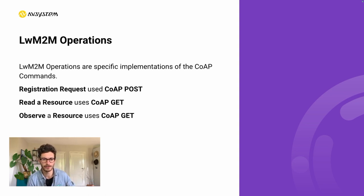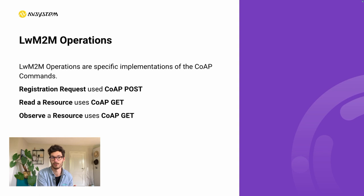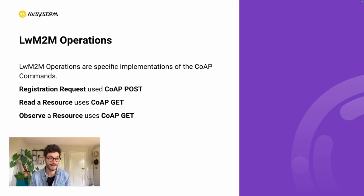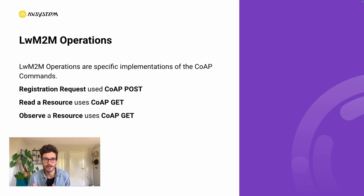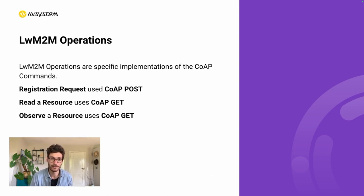As we've seen in previous modules, Lightweight M2M uses specific implementations of CoAP commands. For example, there's the registration process, where the end device requests to register to a specific network — if we deconstruct this request, the device simply sends a CoAP POST message. If the server wants to read a specific resource on the device side, it can send a CoAP GET with additional parameters to retrieve specific sensor values. A cool feature is that it can also use the CoAP GET request to observe a specific resource, meaning that when a resource updates in value after a new sensor reading, the client directly sends an update to the server with that new sensor value.